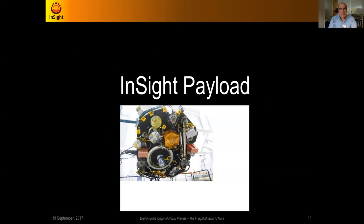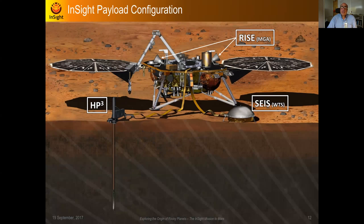Let's talk about the payload. InSight has quite a few instruments. The main instrument is SEIS — the seismic experiment for interior structure — and in the picture it's covered with a wind and thermal shield, or WTS. That shield is necessary because placing a sensitive seismometer directly on the Martian surface exposed to the atmosphere is not how we would ideally do seismology anywhere else, but it's a necessity on Mars.